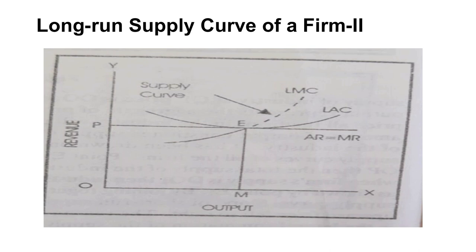Looking at the graph for long-run supply curve of a firm: on the Y-axis is revenue and on the X-axis is output. When price is OP, AR equals MR and production is OM. The equilibrium point E is where LAC, LMC, AR, and MR are all equal. The portion of LMC above LAC — shown as a dotted line — is the supply curve of the firm in the long run when price is OP and output is OM.